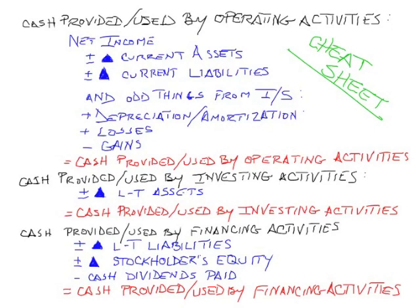If you look at the black ink, you see the three sections of a Statement of Cash Flow. Cash can change hands in a company for one of three reasons. It can change due to operating activities, which is the day-to-day events of the company — the things you're in business to do — or it can change because you're investing in the company. When we're talking about the Statement of Cash Flows, investing means investing in ourselves by buying long-term assets such as a car, truck, or factory equipment to help us generate more income. So when we say cash provided or used by investing activities, we're always talking long-term assets only.